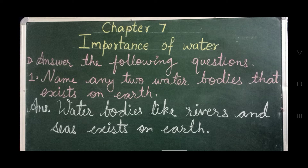Question D: Answer the following questions in brief, just in a sentence or two. Number 1 is: name any two water bodies that exist on Earth. Answer: water bodies like rivers and seas exist on Earth.